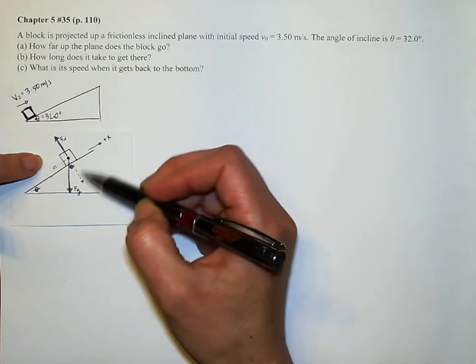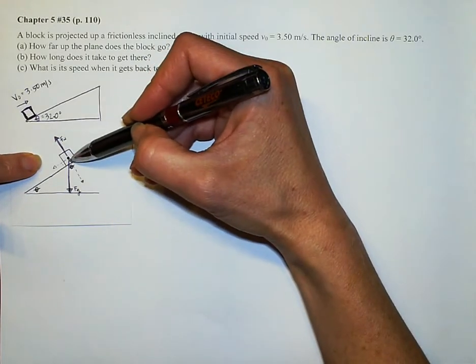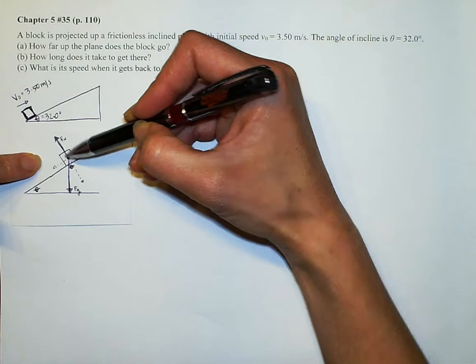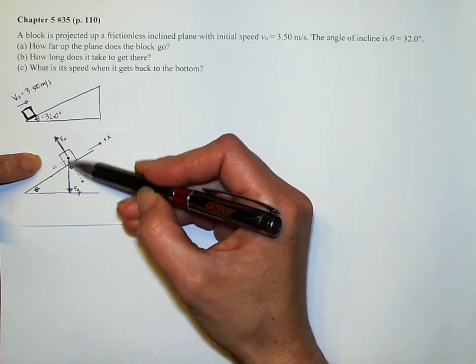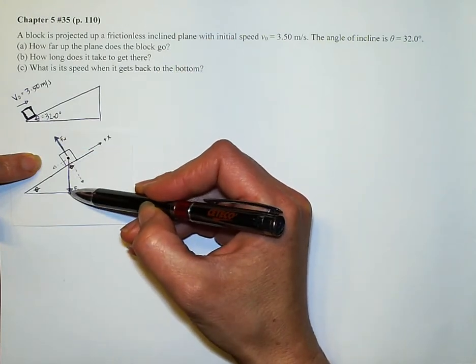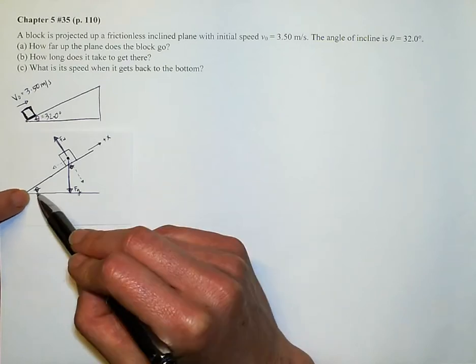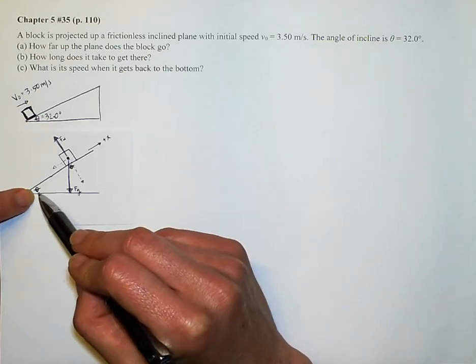I've drawn a free body diagram right here. We have the normal force that is perpendicular to our surface. We have the force due to gravity or the weight going directly down. And I've sketched right here. So this is our angle theta, which is 32 degrees.